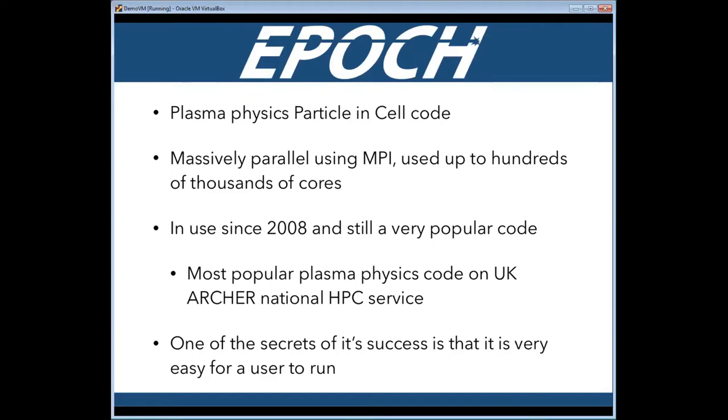So the direct motivation for this project was work on a code called EPOCH, which is what's called a particle-in-cell code. EPOCH is a massively parallel code using MPI parallelism, regularly used on tens of thousands of cores, hundreds of thousands isn't unusual, and I believe people have taken it to millions now. The code's been in use since 2008 and is still very popular. It's the most popular plasma physics code on Archer, the people that funded us, and one of the secrets to it being so successful is it's very easy to run.